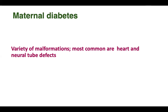Next is maternal diabetes — a variety of malformations can occur, most commonly heart and neural tube defects. If the mother already has diabetes — whether juvenile diabetes, type 2 diabetes, or gestational diabetes mellitus — these risks remain. Particularly in the first three months, if essential diabetes is already present, heart and neural tube defects can be seen.